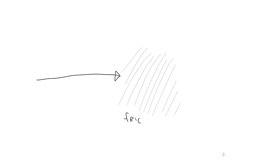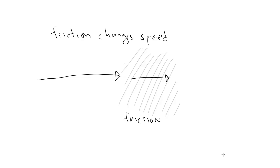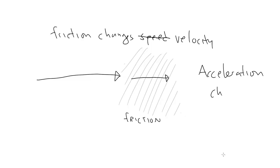We know that if you're moving along at a certain speed and encounter some friction, it will slow you down. In other words, it will change your speed. And we know that speed is one component of velocity, so friction is something that changes velocity. Well, that's the definition of acceleration. So yes, friction is a force vector that we can use just like an acceleration vector.